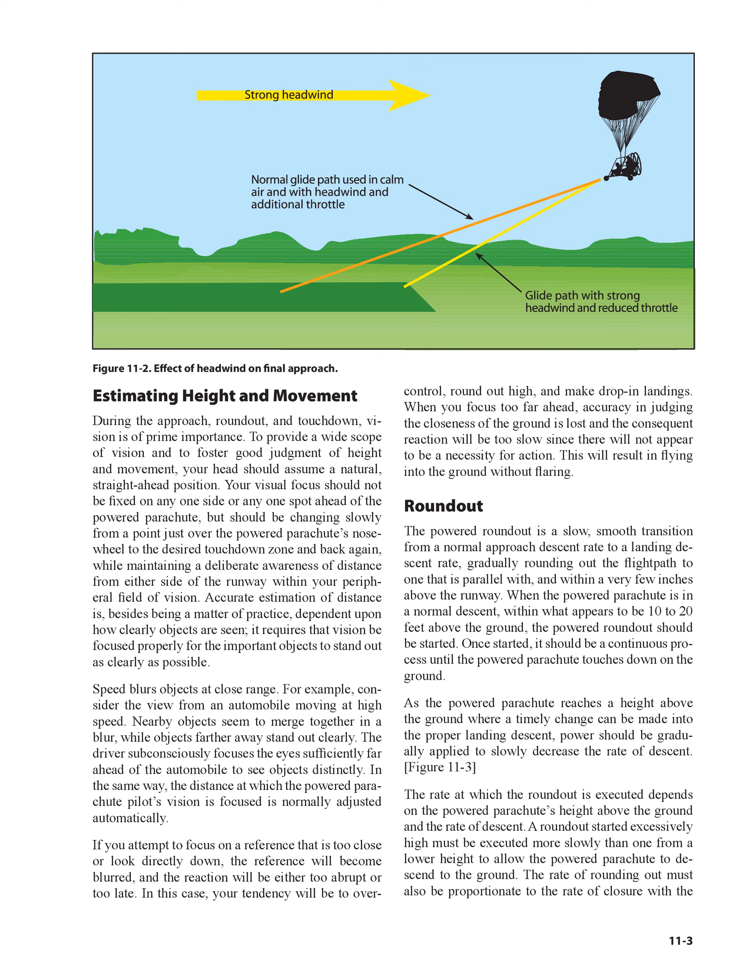Roundout: The roundout is a slow, smooth transition from a normal approach descent rate to a landing descent rate, gradually rounding out the flight path to one that is parallel with and within a very few inches above the runway. When the powered parachute is in a normal descent within what appears to be 10 to 20 feet above the ground, the roundout should be started. Once started, it should be a continuous process until the powered parachute touches down on the ground.